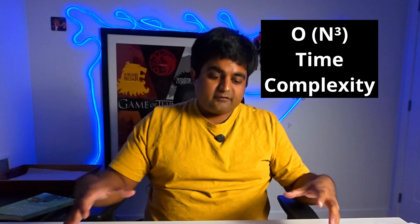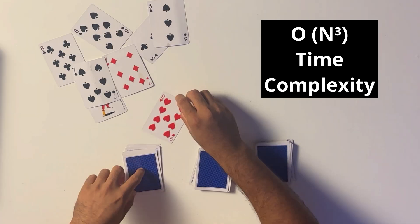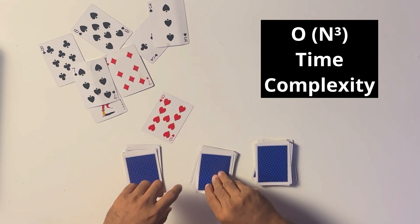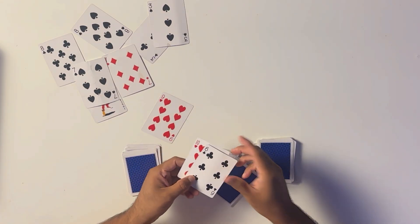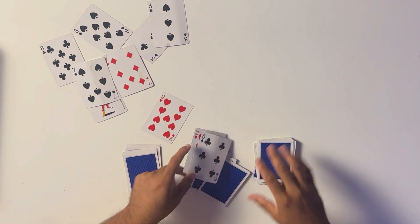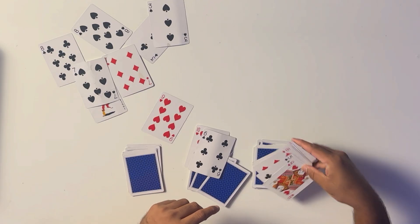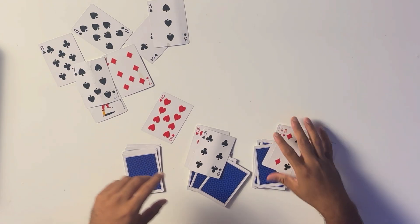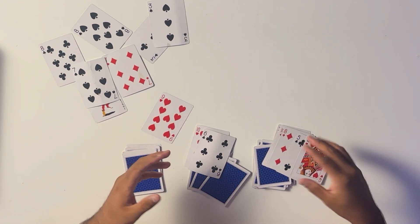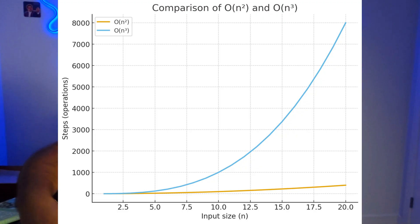For O(N³) time complexity, we use three sets of decks. We take a value from one deck, find a matching pair in the second deck, then find another match in the third deck. This can take substantially longer. It is a loop within a loop within a loop.